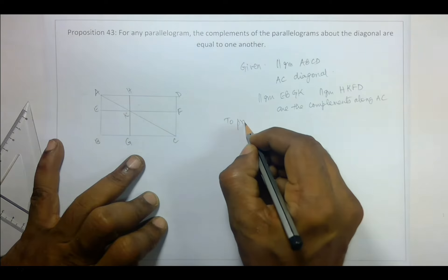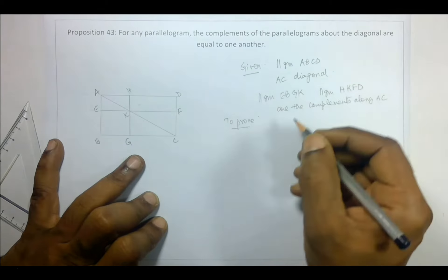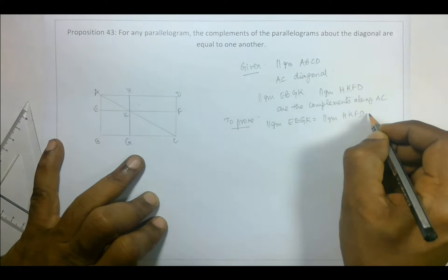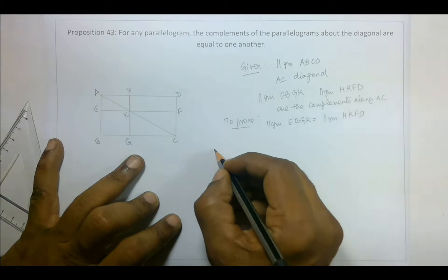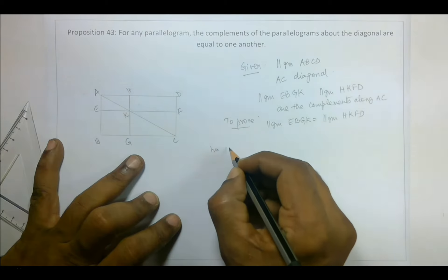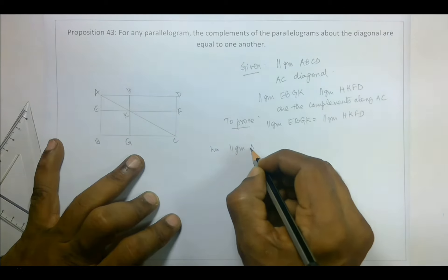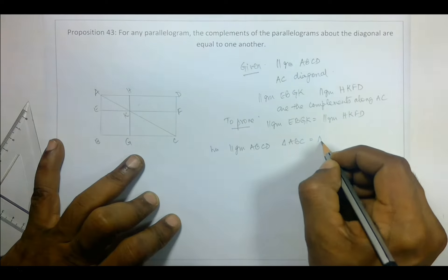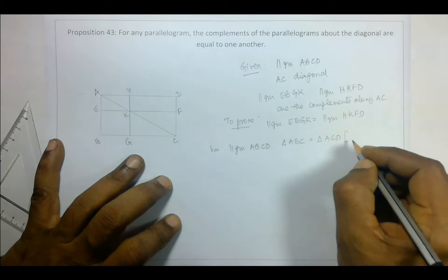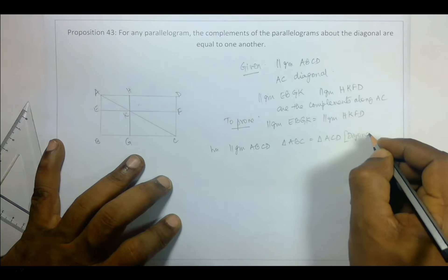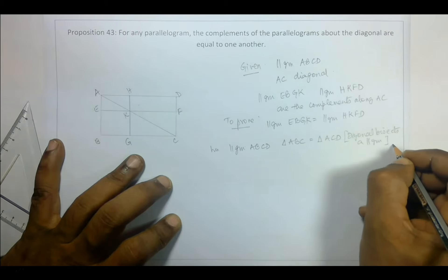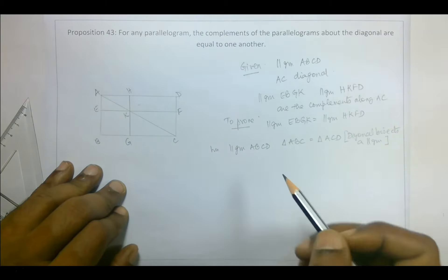What we have to prove is that parallelogram EBGK is equal to parallelogram HKFD. Now, it's very straightforward: in parallelogram ABCD, triangle ABC is equal to triangle ACD because the diagonal AC bisects the parallelogram. That's fairly straightforward.